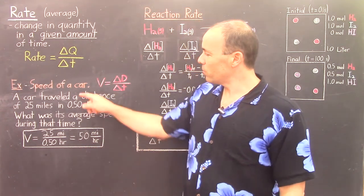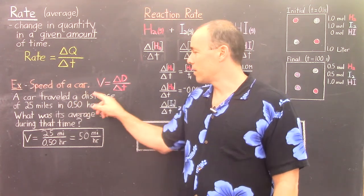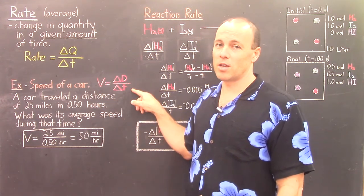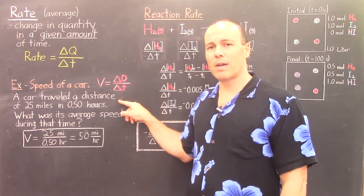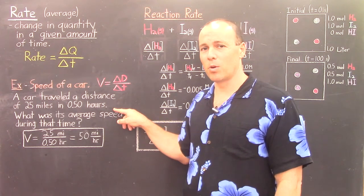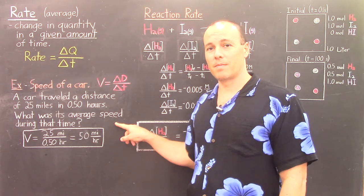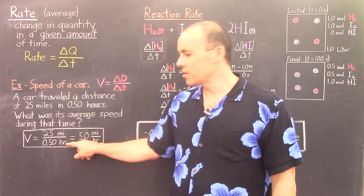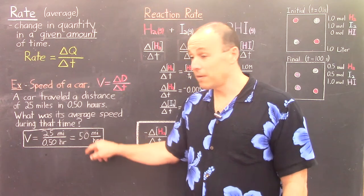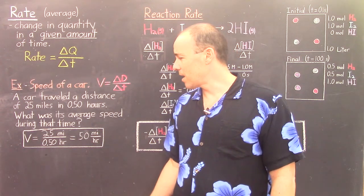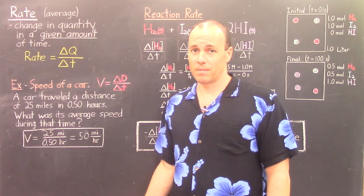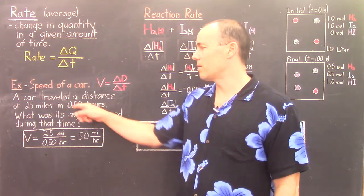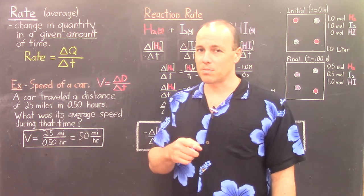Suppose we want to describe the speed of a car. We call this V for velocity, and velocity equals ΔD (change in distance) over the change in time. Suppose a car traveled a distance of 25 miles in 0.5 hours — what was its average speed? The velocity equals 25 miles over 0.5 hours, giving you 50 miles per hour. This was the car's average speed during that time interval. The car could have gone faster or slower, as long as it covered 25 miles in that time.